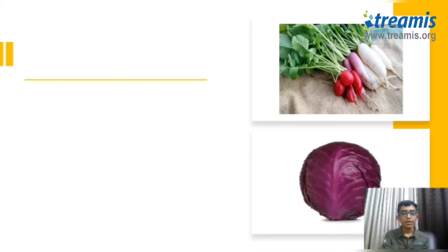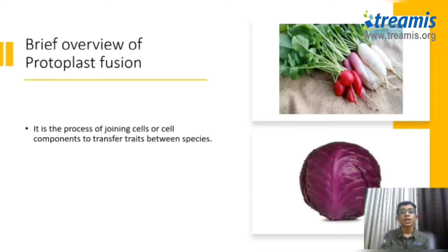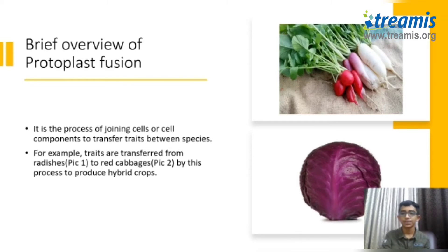Here is a brief overview of protoplast fusion. It is the process of joining cells or cell components to transfer traits within species. Traits are transferred from radishes to red cabbages by this process to produce hybrid crops.